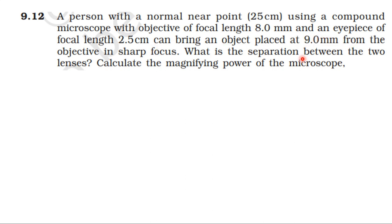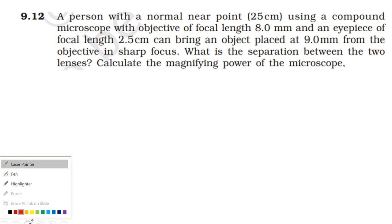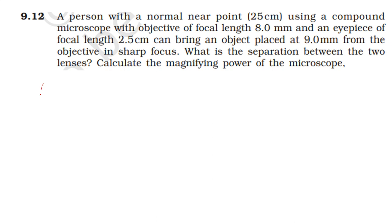What is the separation between the two lenses? Focal length of the objective lens is 8 mm. Focal length of the eye lens is 2.5 cm. The object distance is 9 mm. The final image distance is 25 cm.